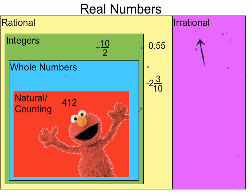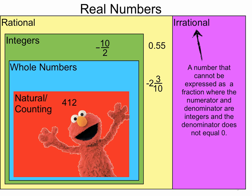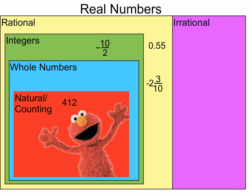Irrational numbers, that's a number that cannot be expressed as a fraction where the numerator and denominator are integers and the denominator does not equal zero. What exactly does that mean? Well, if we look at a few examples it might make it a little simpler to understand.